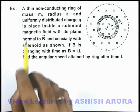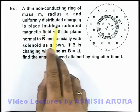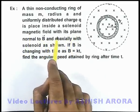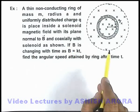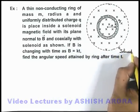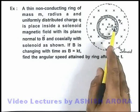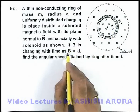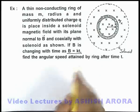In this example we are given a thin non-conducting ring of mass m, radius a, and uniformly distributed charge q. It is placed inside a solenoid magnetic field with its plane normal to B vector and coaxially with the solenoid, as we can see. Here the dotted line represents the solenoid boundary, in which a magnetic induction exists along the axis and a circular ring of radius a and charge q is placed. We are given that if B is changing with time as B equals kt, we are required to find the angular speed attained by the ring after time t.